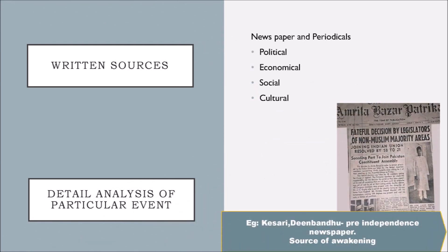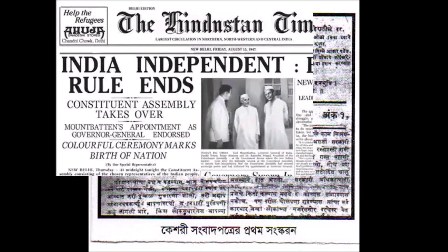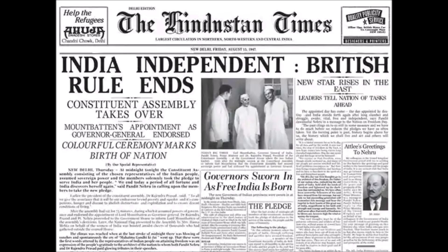We shall see newspapers and periodicals as a part of written sources. Newspapers provide us information about contemporary events. We get information about the political, social, economic and cultural happenings of that period. In the pre-independence period, there were many newspapers like Nyanuday, Nyan Prakash, Amrit Bazar Patrika, Deen Bandhu, Kesari, etc. These all newspapers acted as a source of awakening in the minds of the people. Through these newspapers, many people came to know about the British policies regarding India.